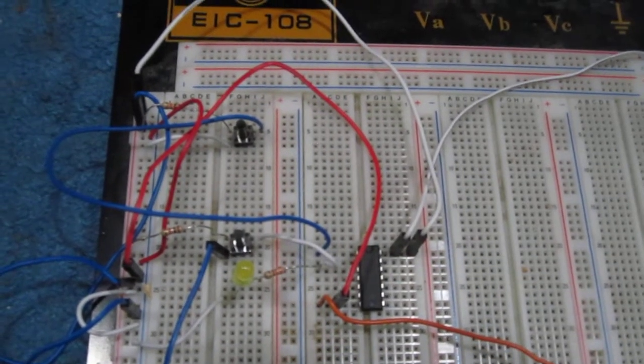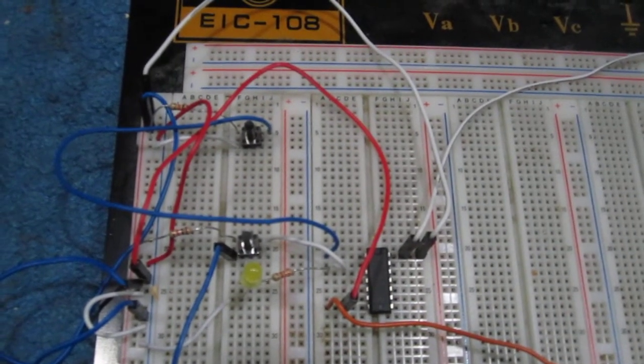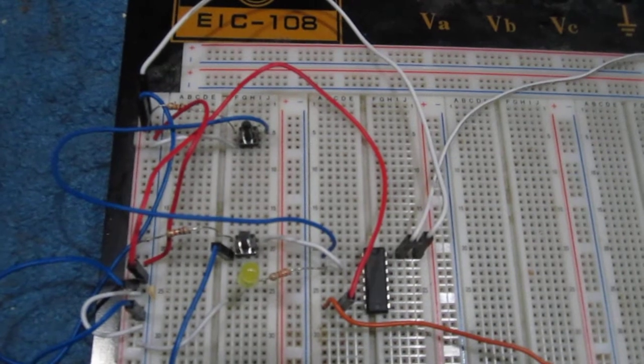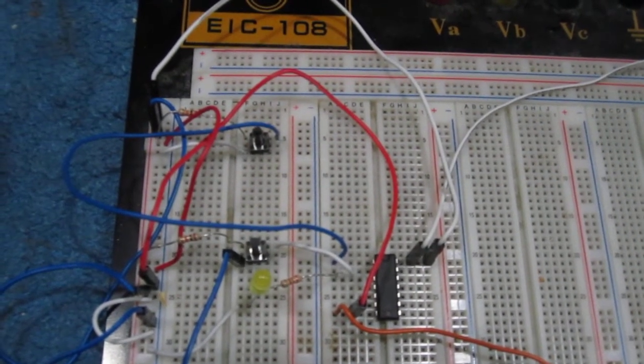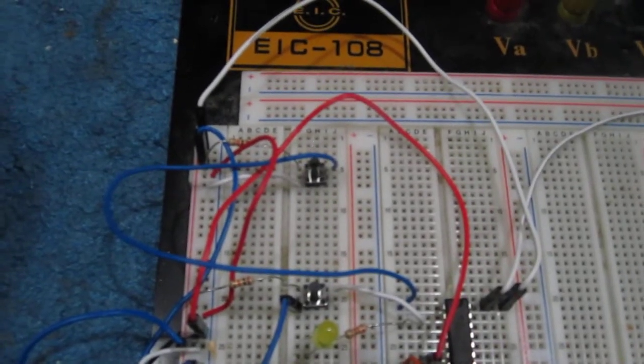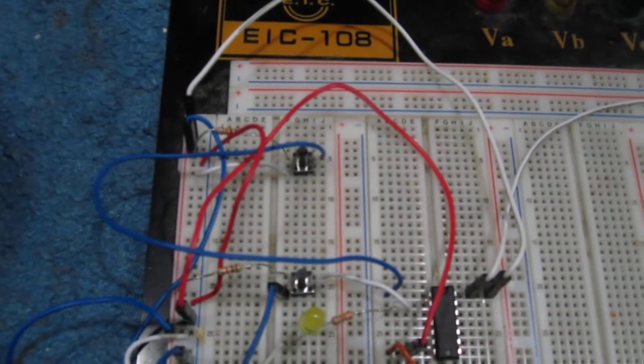has four NAND gates, and each NAND gate has two inputs and one output. In this circuit, we're just going to use one NAND gate, and this NAND gate will have two